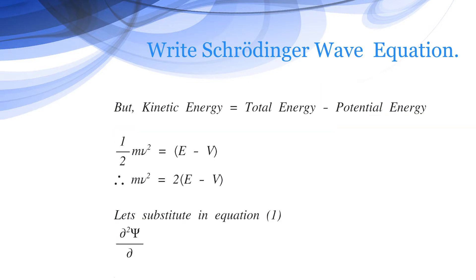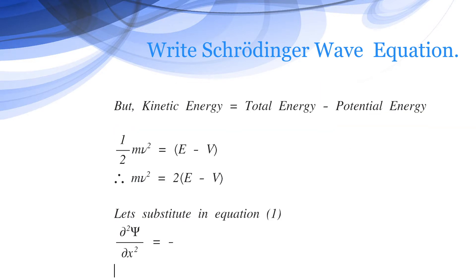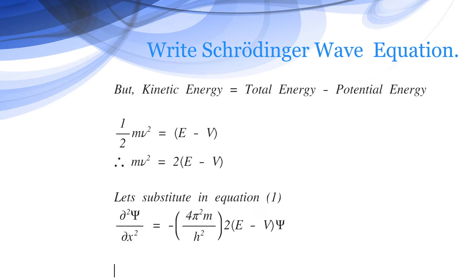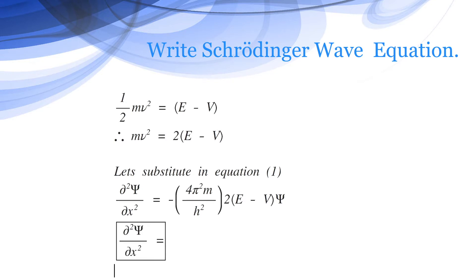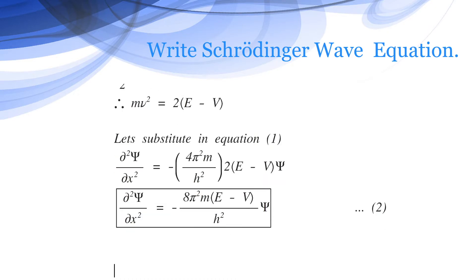Therefore, the equation becomes d square psi by dx square equals minus 4 pi square m by h square into 2 E minus V psi. Or d square psi by dx square equals minus 8 pi square m E minus V divided by h square into psi. This is the final equation given by Schrödinger.